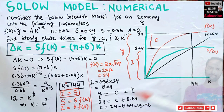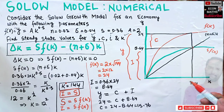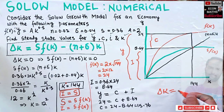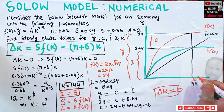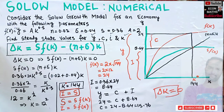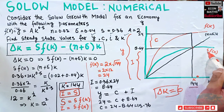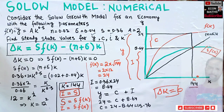To summarize: at the steady state level, capital per worker does not increase, so Δk = 0. At k* = 144, investment equals depreciation — investment is used entirely for the maintenance of the capital stock. I hope this video made things clear. Thank you.